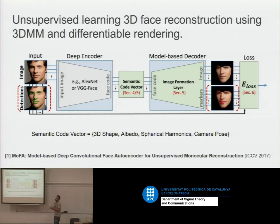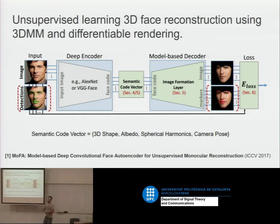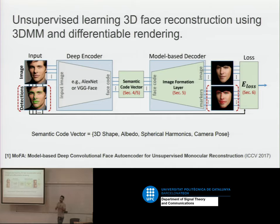Then they predict the albedo — the amount of light reflected by a surface. For each pixel, a number says here you reflect more, here less. The spherical harmonics represent the illumination of the scene — we can represent that with a linear model as well. And finally, the camera pose — rotation and translation — which is something we have already worked with.